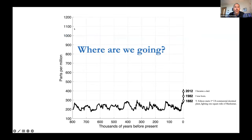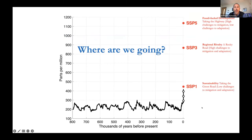Unfortunately, I have to expand the y-axis of the graph to show where we might be going. These are SSPs — shared socioeconomic pathways — which are essentially storylines of how society may unfold in the future. This shows the bracket of ranges we may see in terms of CO2 in the atmosphere by the year 2100. If you take a step back and realize that these Earth-climate-changing swings in CO2 were on the order of 100 parts per million, and we've already gone to about 420 ppm, and where we could be going on a fossil fuel-intensive pathway — it's really something to behold, this experiment that we're conducting in a pretty uncontrolled fashion.